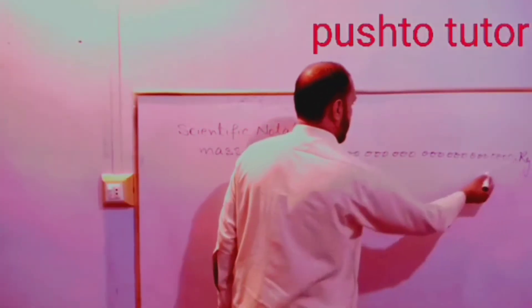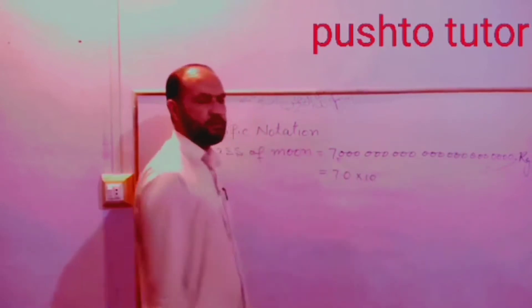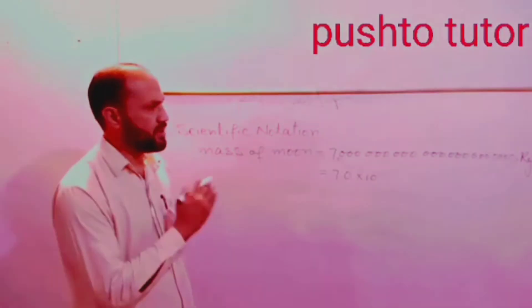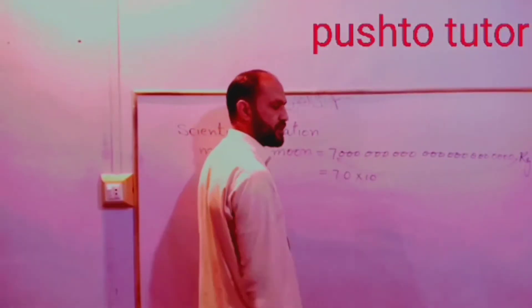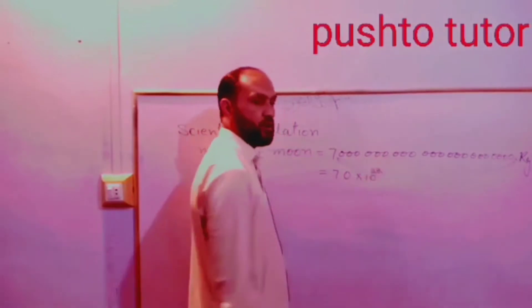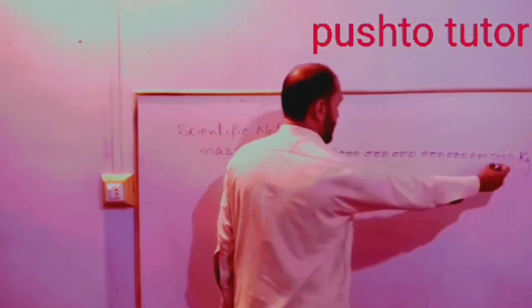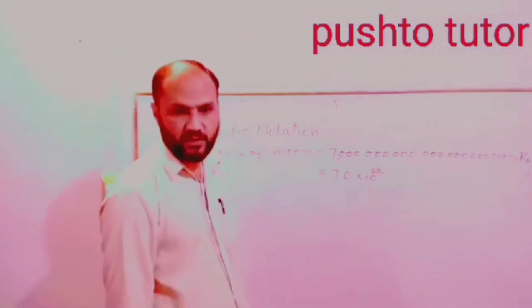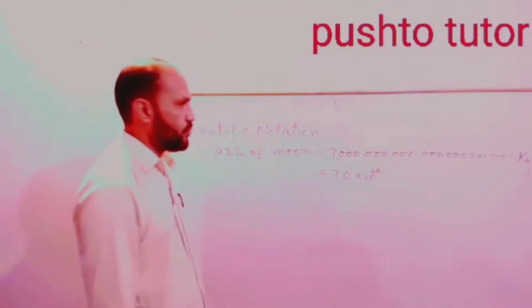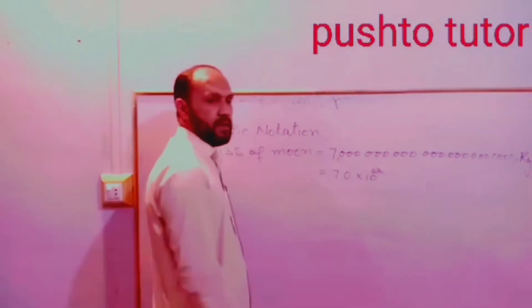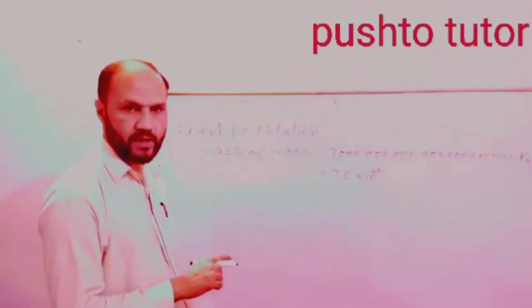Now the decimal result is 7.0 into 10 to a power. The decimal places give 10.0 into 10 to a power. Now the decimal point has moved 22 places. If this power becomes 22, moving the decimal point to the left side means the exponent is positive; moving it to the right side means the exponent is negative.